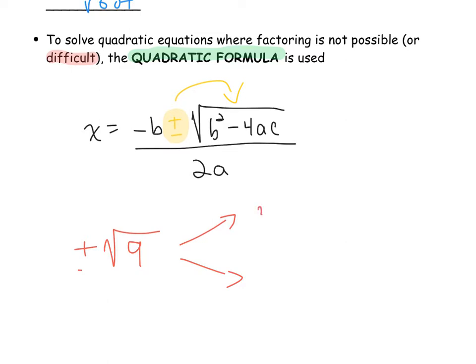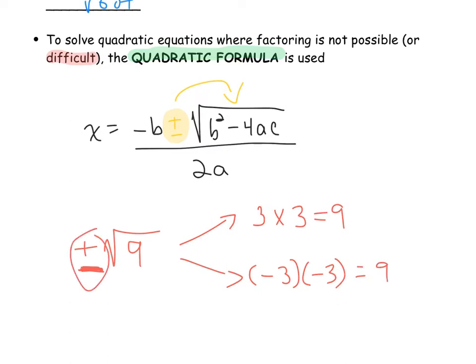That plus or minus just refers to the fact that there are two possibilities — the positive and the negative result — that can happen when we take the square root. Once we've substituted a, b, and c into the formula, we really have two equations: one using the positive version and one using the negative version, giving us x = (-b + √(b²-4ac)) / 2a and x = (-b - √(b²-4ac)) / 2a.